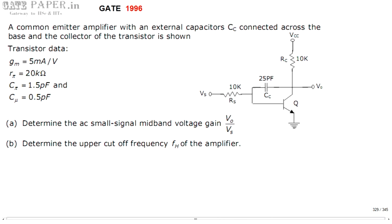We are discussing the GATE 1996 ECE paper. This question is related to analog circuits. The circuit is a common emitter amplifier with an external capacitor. The parameters are: GM transconductance = 5 mA/V, Rpi (base to emitter resistance looking into base) = 20 kΩ, and Cpi and Cmu are parasitic capacitances — also called inter-electrode or internal capacitances — existing only at high frequencies in the picofarad range: 1.5 pF and 0.5 pF.